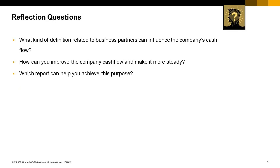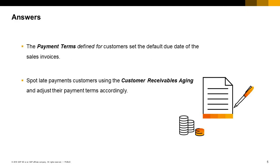The sales process affects the cash status of the business. What kind of definitions related to business partners can influence the company's cash flow? Even when it is profitable, a company can go bankrupt due to cash flow problems, so keeping a positive cash flow is crucial. The company can improve cash flow results by defining the appropriate payment terms for each customer. Payment terms are set for each business partner in the Business Partner Master Data on the Payment Terms tab.